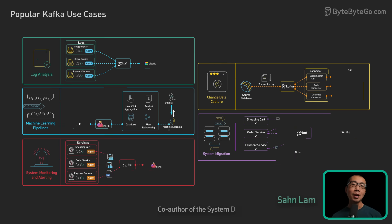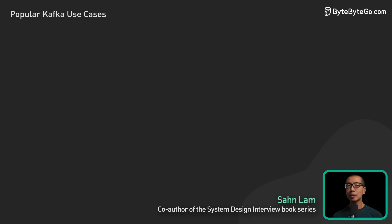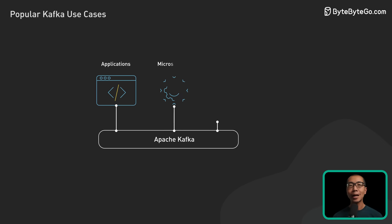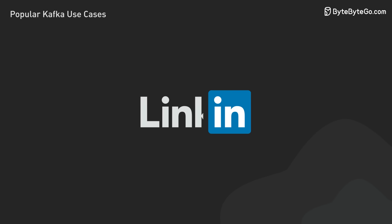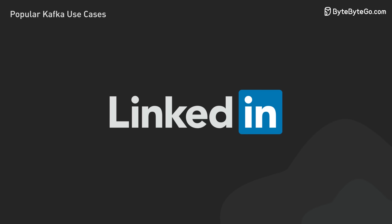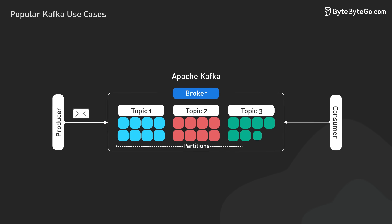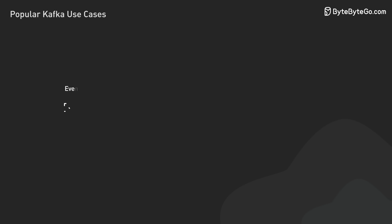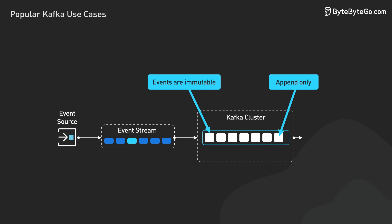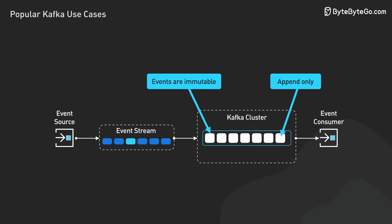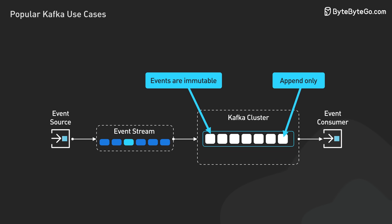In this video, we take a look at the top 5 use cases of Apache Kafka. We explore how Kafka solves critical challenges in modern software architecture. Kafka started as a tool for processing logs at LinkedIn. It has since evolved into a versatile distributed event streaming platform. Its design leverages immutable append-only logs with configurable retention policies, making it useful for many applications beyond its original purpose.